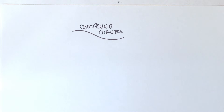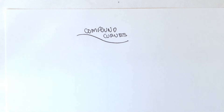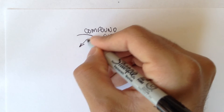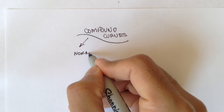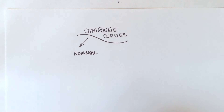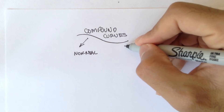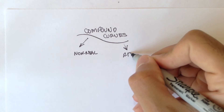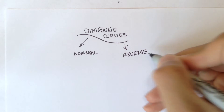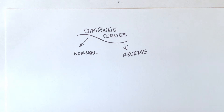In this video we're going to do a quick introduction to compound curves. Compound curves are just two horizontal curves put together. There are two types of compound curves: one is called normal compound curves, and the other is called reverse compound curves. Normal compound curves are two horizontal curves put together and they're both turning the same way.